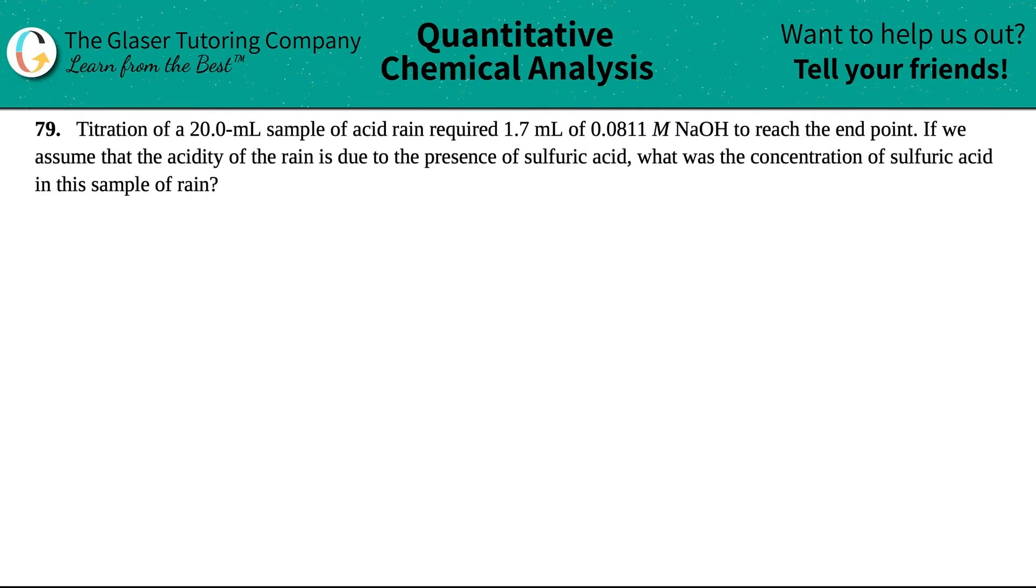Number 79, titration of a 20 mil sample of acid rain required 1.7 mils of 0.0811 molarity sodium hydroxide solution, which is NaOH, to reach the endpoint. If we assume that the acidity of the rain is due to the presence of sulfuric acid, what was the concentration of sulfuric acid in this sample of rain?